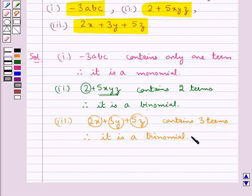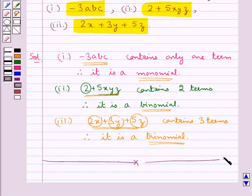So, the first expression which is minus 3abc is a monomial. The second expression 2 plus 5xyz is a binomial and the third expression 2x plus 3y plus 5z is a trinomial. So, this completes the session. Hope you have understood the solution of this question.